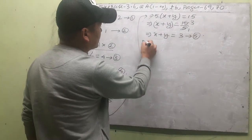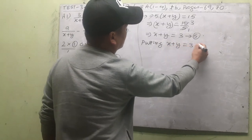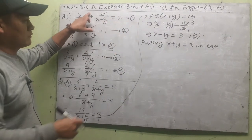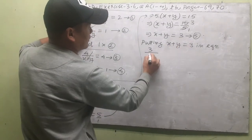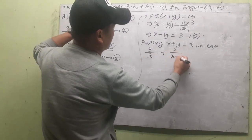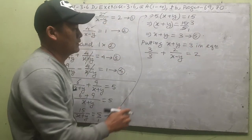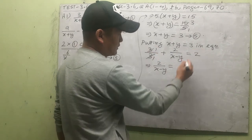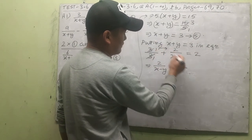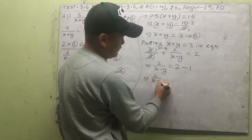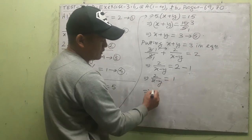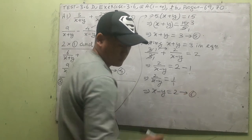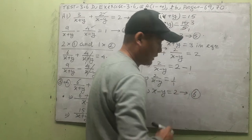Substituting x+y = 3 into equation 1: 3/3 + 2/(x−y) = 2, which gives 1 + 2/(x−y) = 2. Therefore 2/(x−y) = 1, so x−y = 2. Let's call this equation 6.